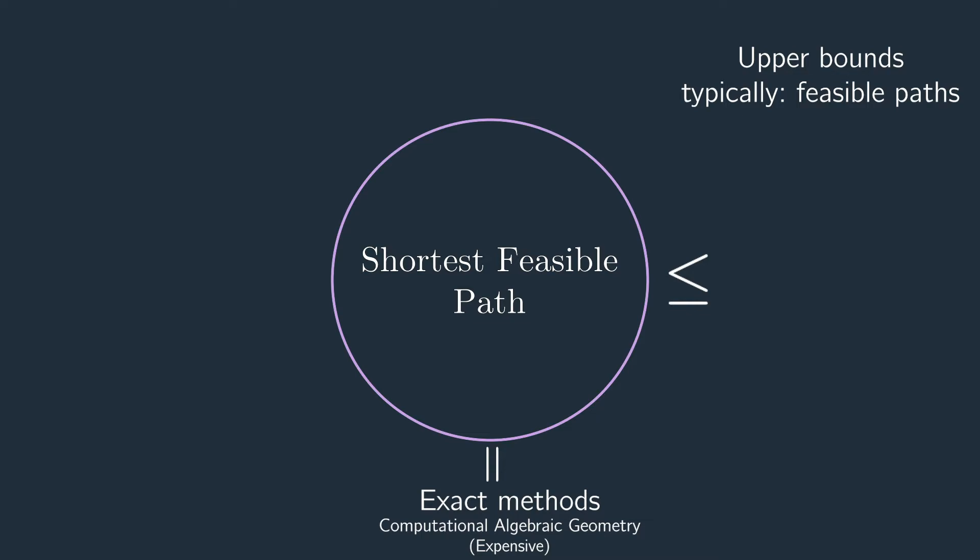Now when you stare at this picture, it really leaves something to be desired, right? Because what about lower bounds? Let's say you use RRT and it gives you some feasible path. Can you tell how far you are from being optimal? It would be good if we had some technique that gives us an idea of how far from optimality we are.